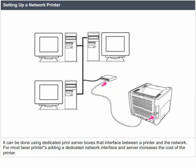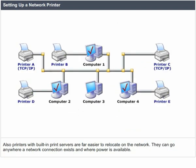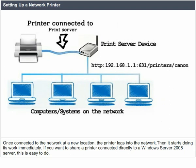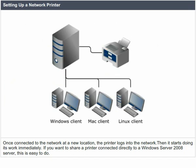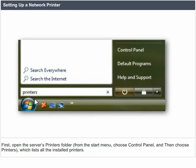Printers with built-in print servers are far easier to relocate on the network — they can go anywhere a network connection exists and where power is available. Once connected to the network at a new location, the printer logs into the network and starts doing its work immediately. If you want to share a printer connected directly to a Windows Server 2008 server, open the server's printers folder from the start menu, choose control panel and then choose printers.